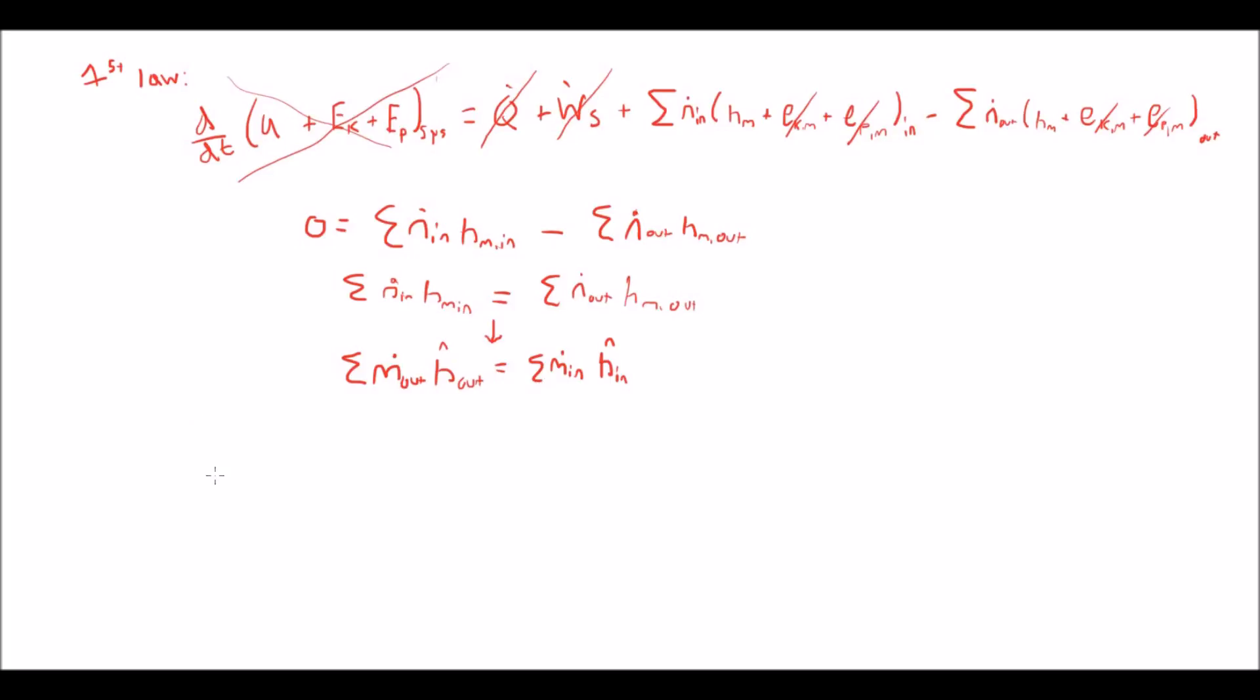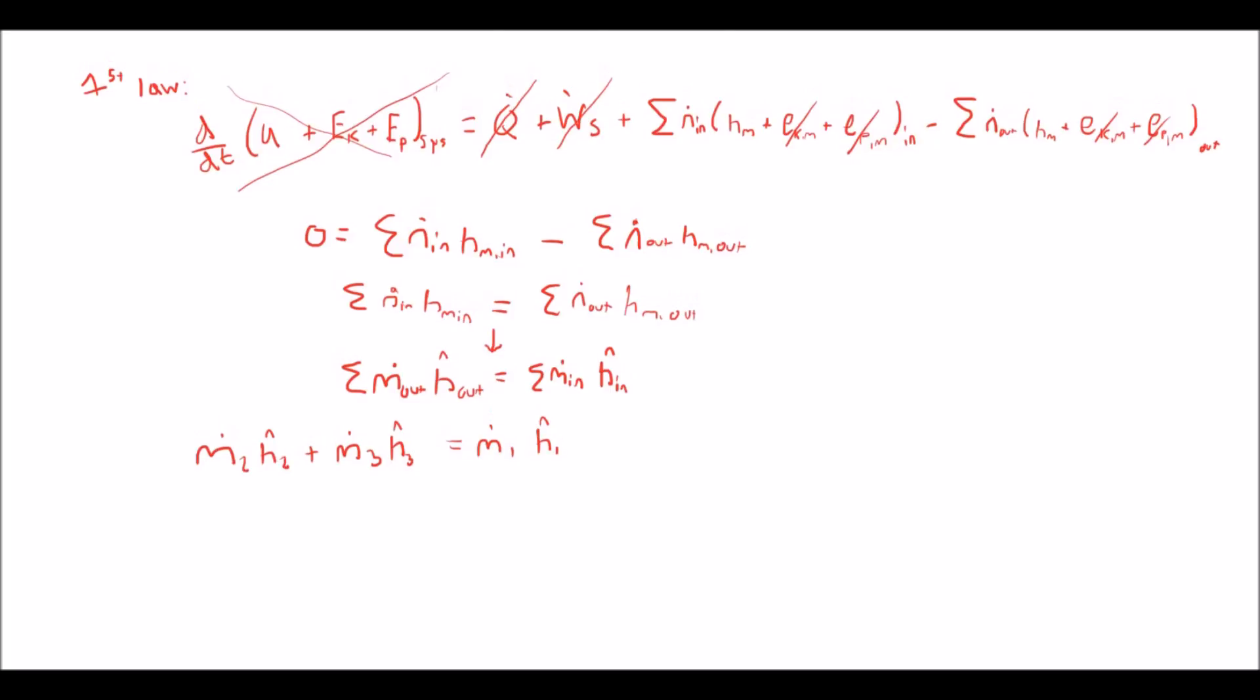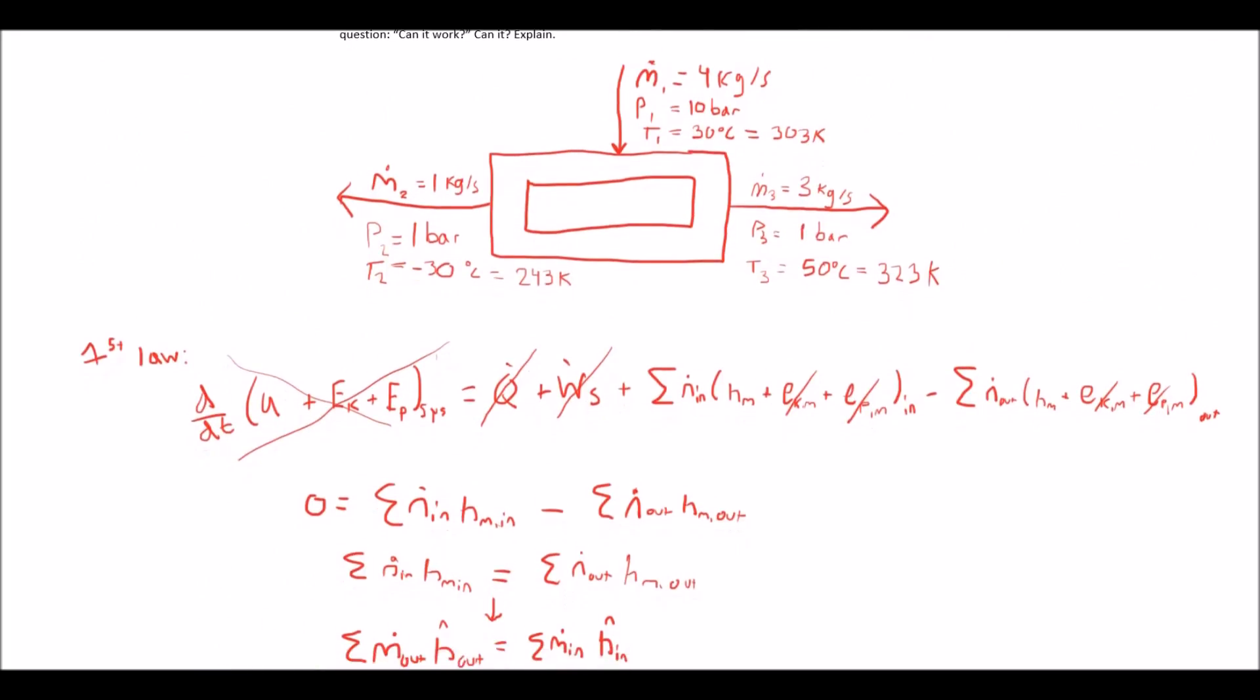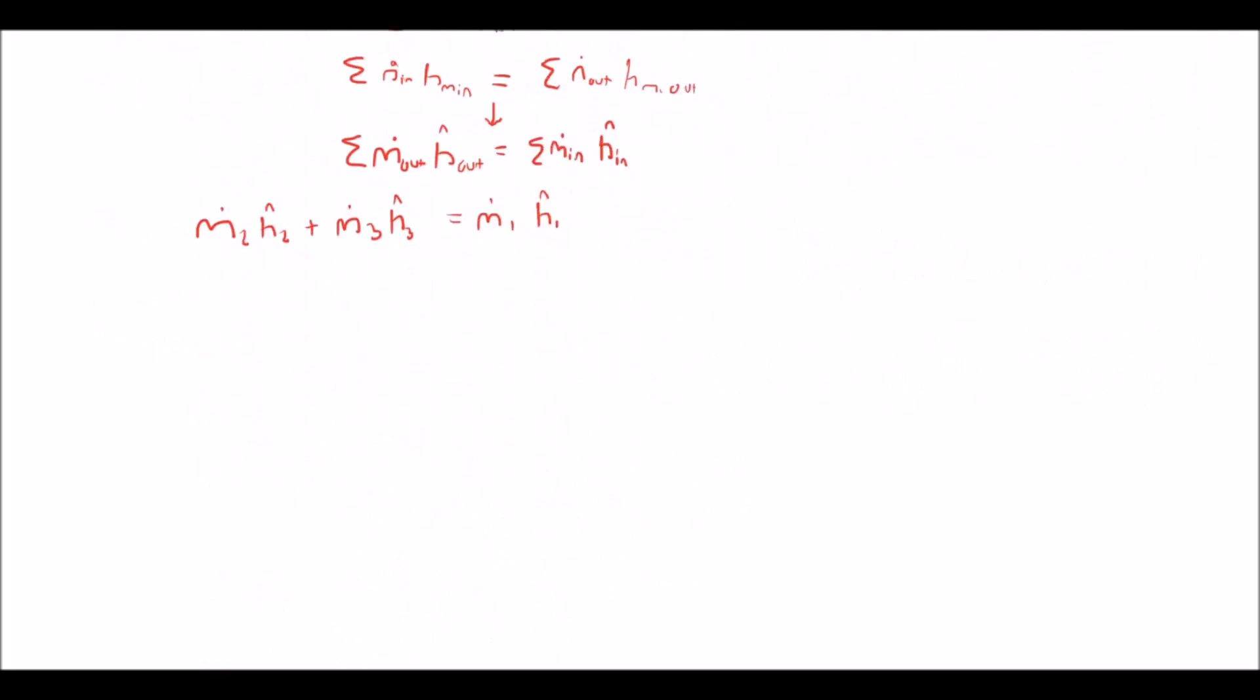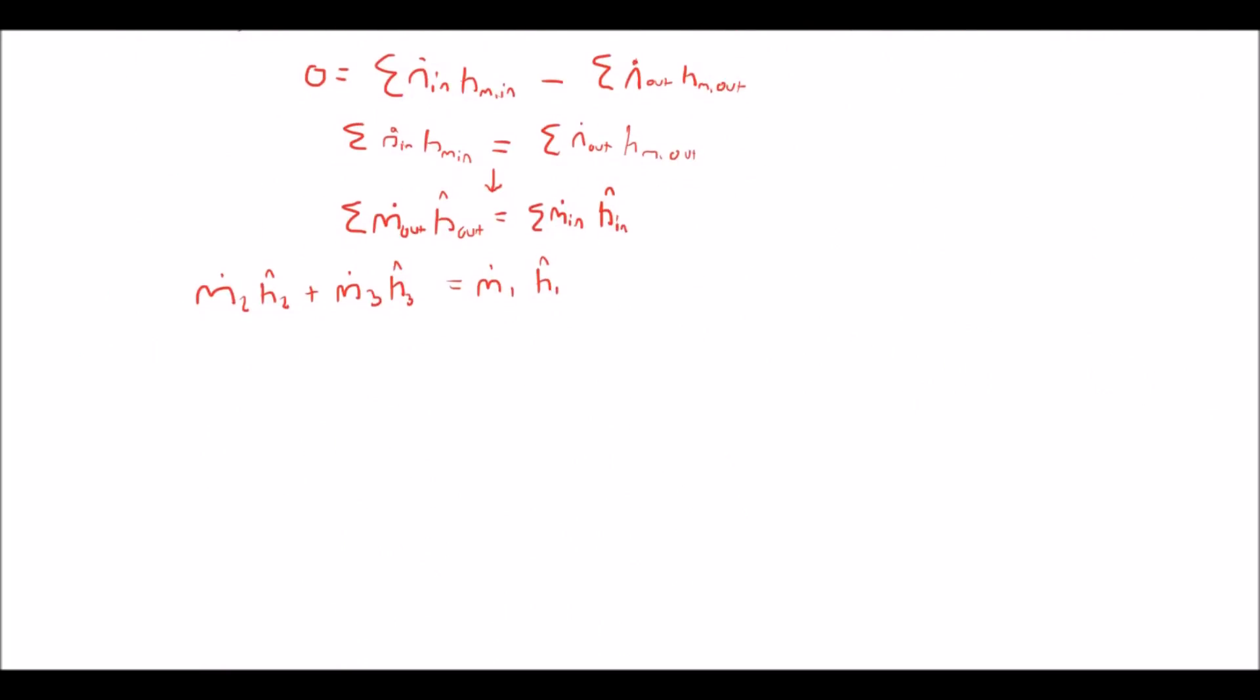We're going to plug in the streams for the summation of the out and in streams. Also notice from the schematic up there that m1 is equal to m2 plus m3 from the mass balance. So we can plug that in for m1 in this equation. And then you can simplify the equation one more time.